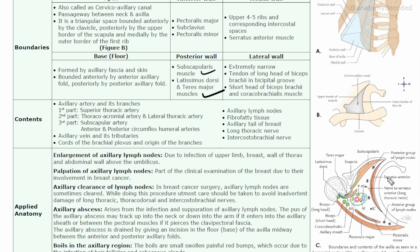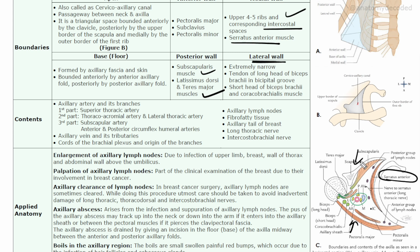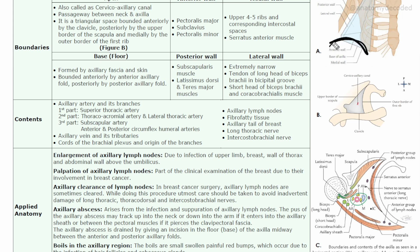The medial wall is formed by the upper four to five ribs, the corresponding intercostal spaces, and the serratus anterior muscle. The lateral wall is narrow, where the anterior and posterior walls converge. It contains the tendon of the long head of biceps in the bicipital groove, the short head of biceps brachii, and the coracobrachialis muscle.